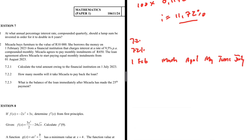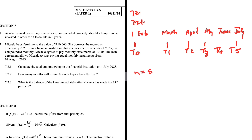Let's draw a timeline. 1 February is t0 — where we take the loan. Then March, April, May, June, July — so t1, t2, t3, t4, t5. We are interested in the amount owing at 1 July. There are five months between 1 February and 1 July, so n = 5. The principal P = 10,000. We're looking for the accumulated amount A.